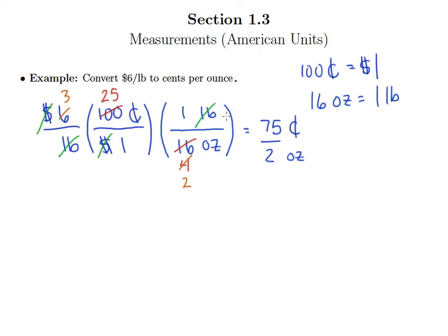But we need to write this as either a mixed number or a decimal. Since we're dividing by 2, we'll get a nice decimal. So let's get an answer as a decimal.